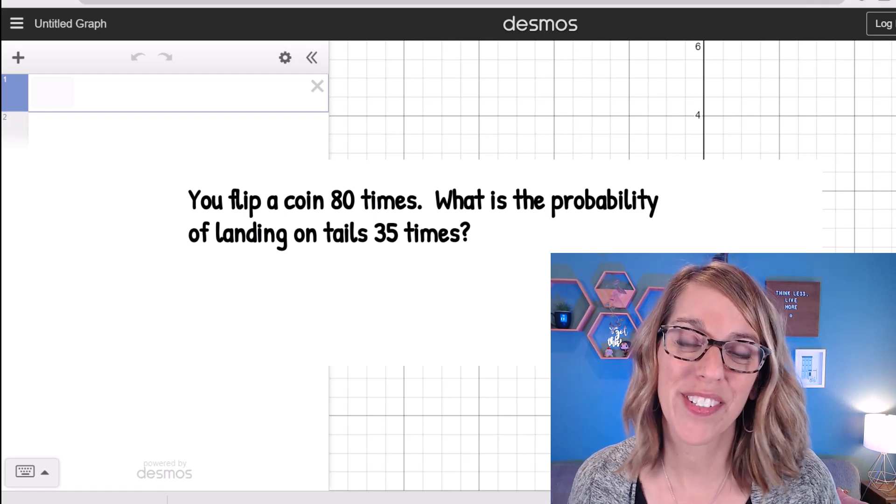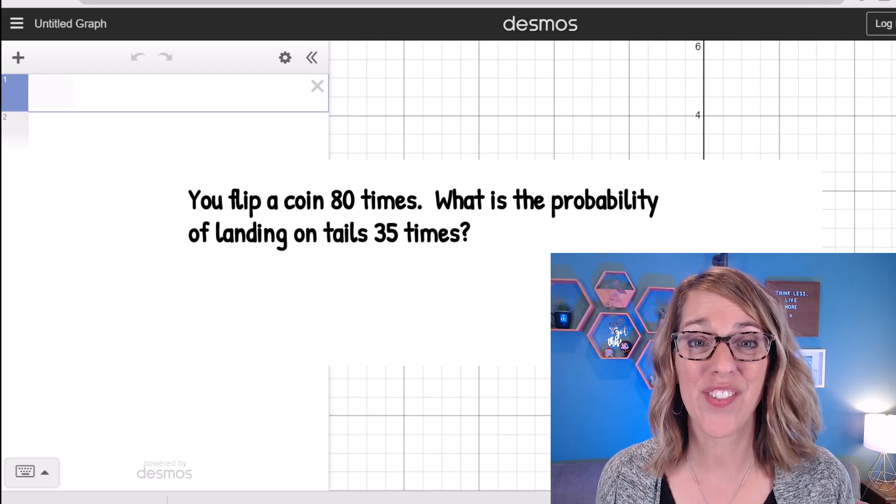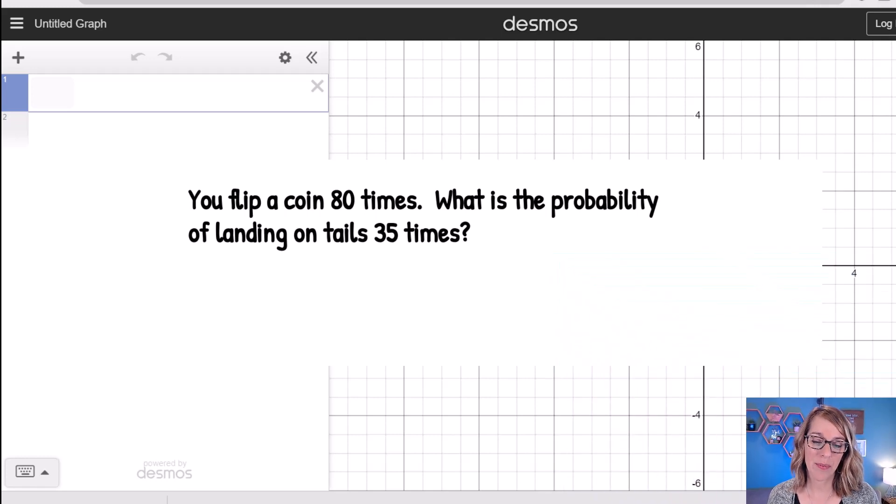I'm going to show you how to use Desmos to do some binomial probabilities. It does a really great job. I'm going to use this example: we're going to flip a coin 80 times. So as I'm going through the important pieces for this binomial probability, I know that n is equal to 80.